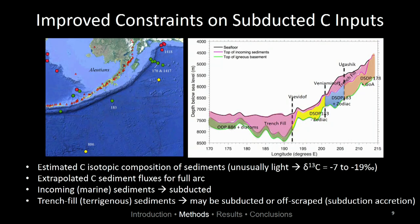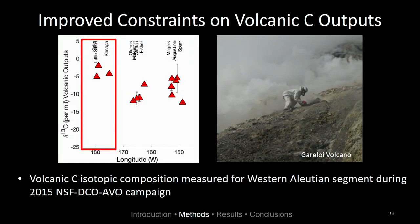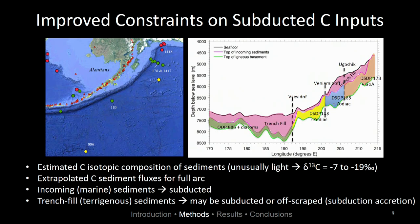In this study, we wanted to use two new data sets. The first were improved constraints on subducted carbon inputs. This is work by my colleagues Terry Plank and Alberto Malinverno. They've used marine cores from the Gulf of Alaska to estimate the carbon isotopic composition of the subducted inputs.